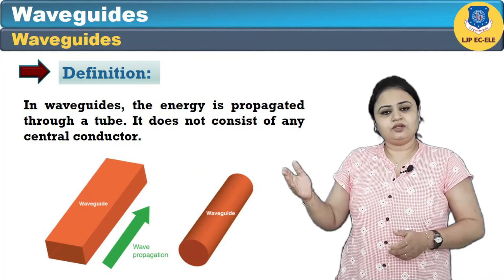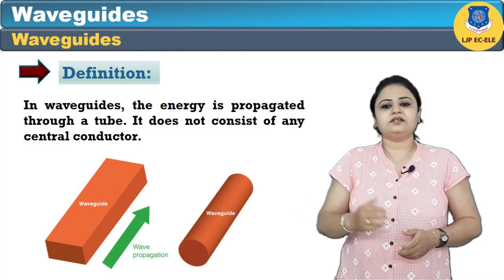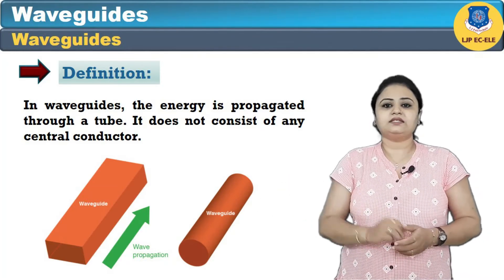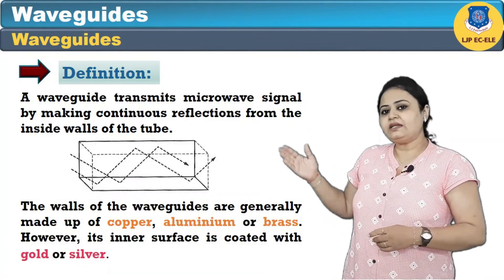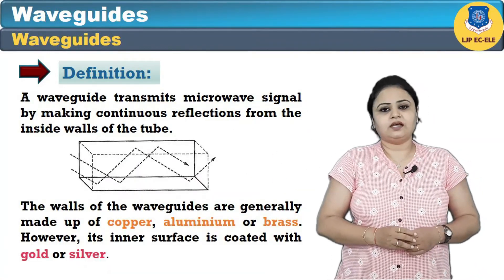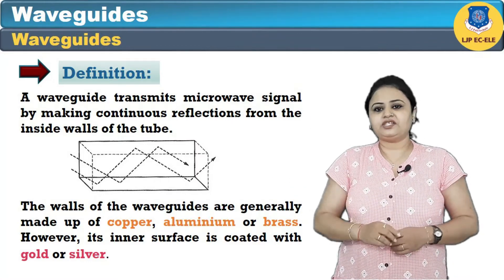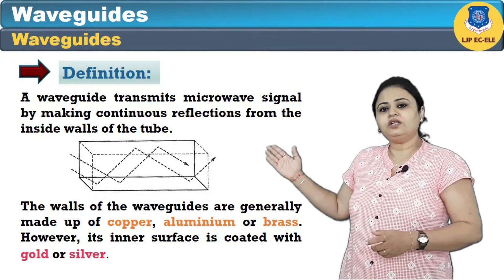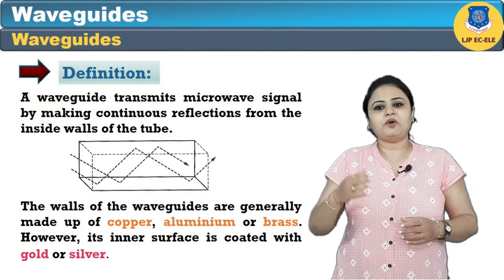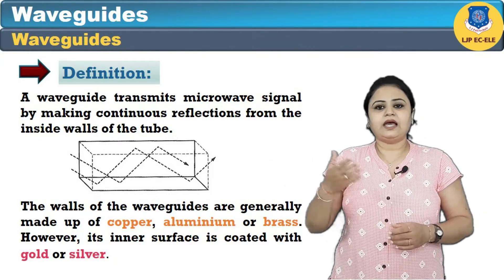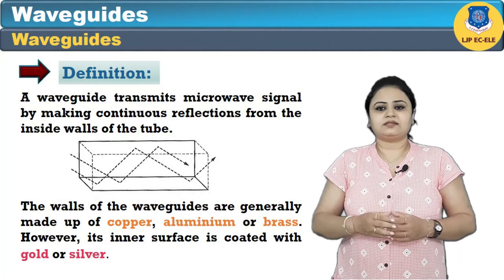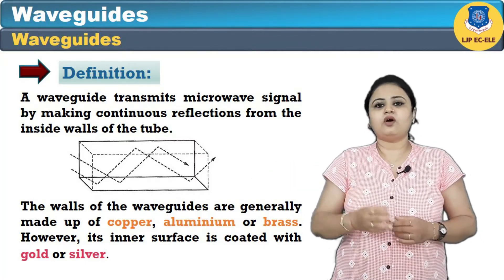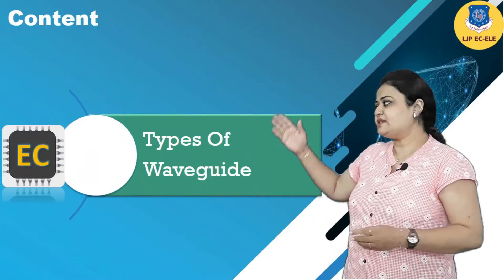In waveguides, the energy is propagated through the tube. It can be either rectangular, circular, or cylindrical waveguide, and it does not consist of any central conductor. A waveguide transmits microwave signals making continuous reflections from the inside walls of the tube. The walls of the waveguides are generally made up of copper, aluminum, or brass; however, the inner surface is coated with gold or silver.